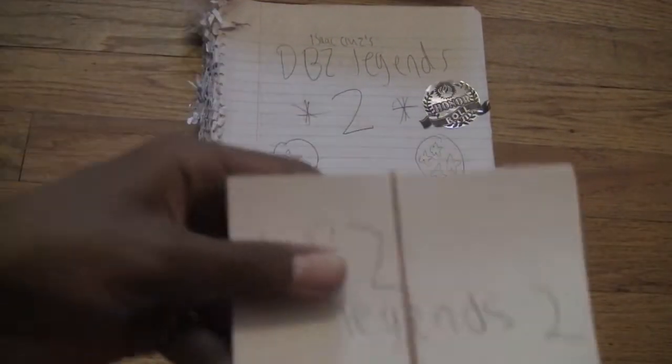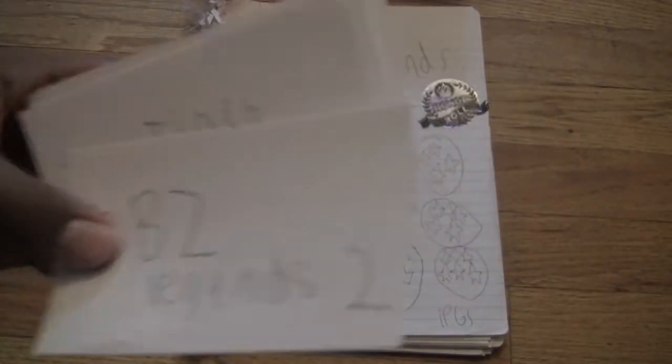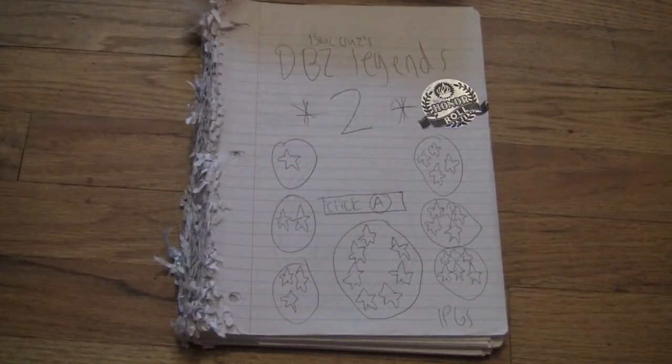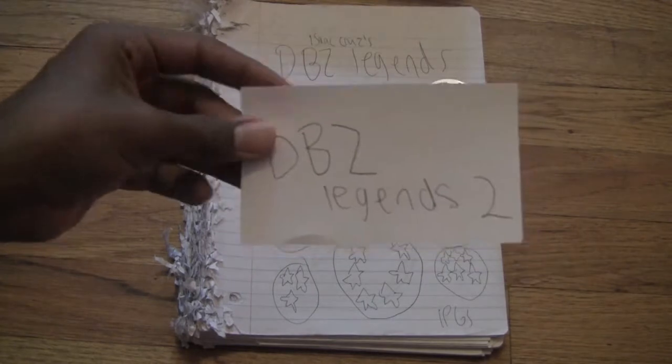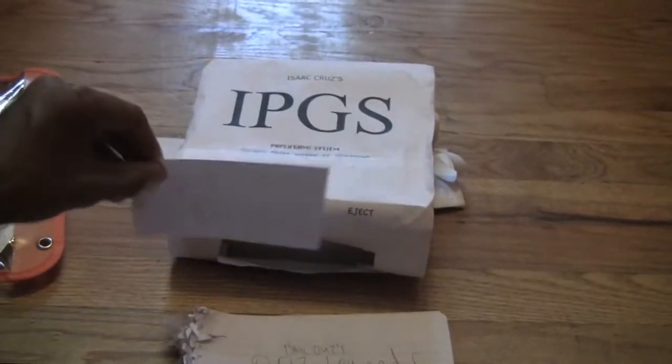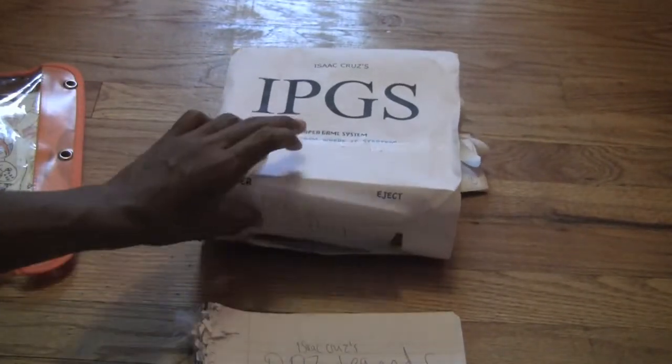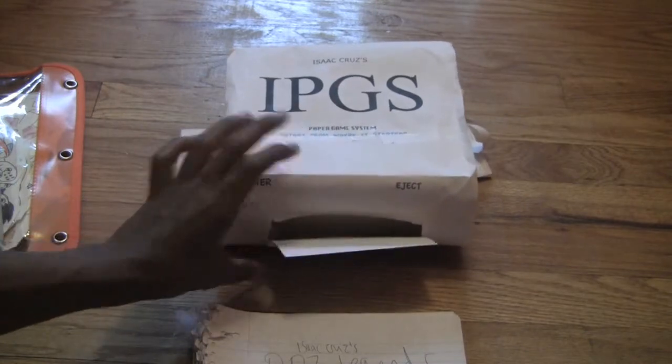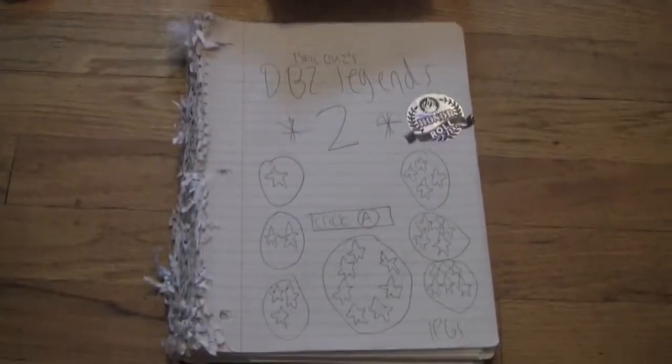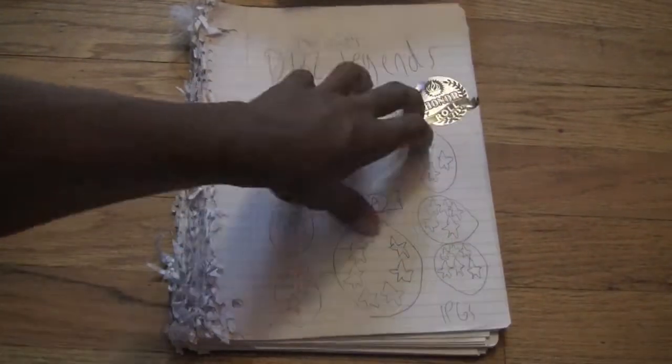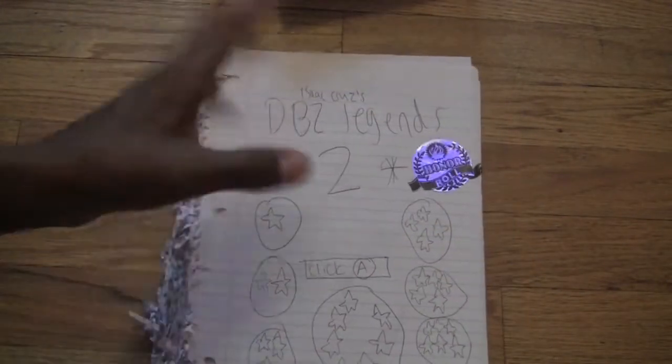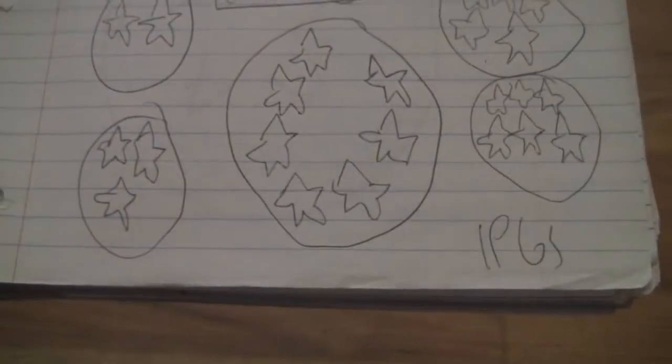So first thing we're going to do here is of course take out the cartridge. And you guys know by now hopefully how to insert it. Okay, so this game is the fourth game in the DBZ line of games. Over there it says Isaac Cruz as usual. On the bottom it has the IPGS logo as usual.